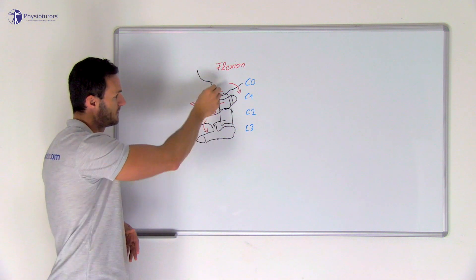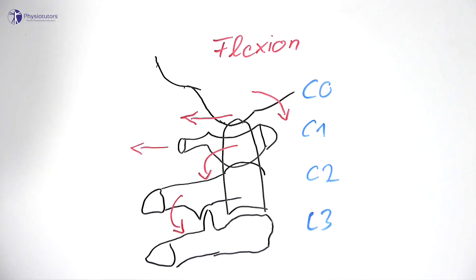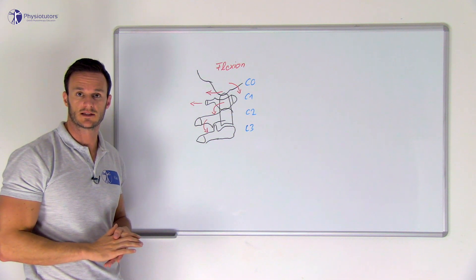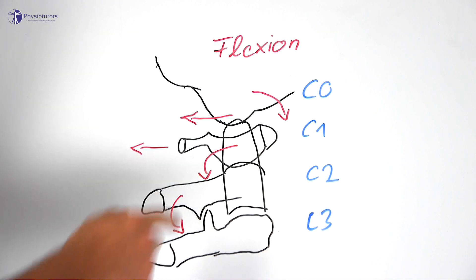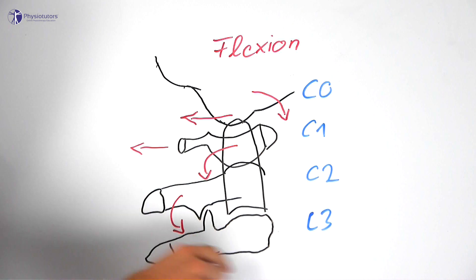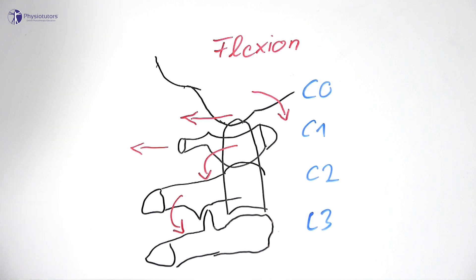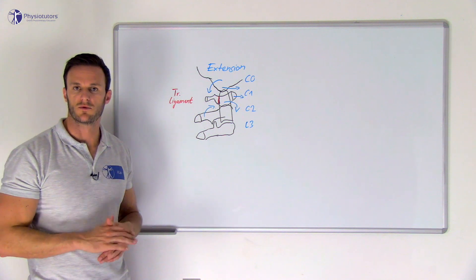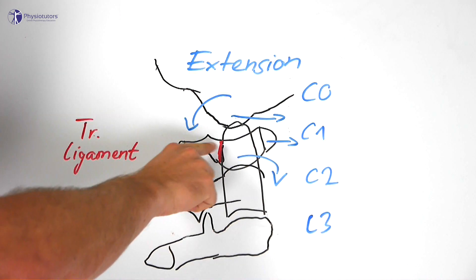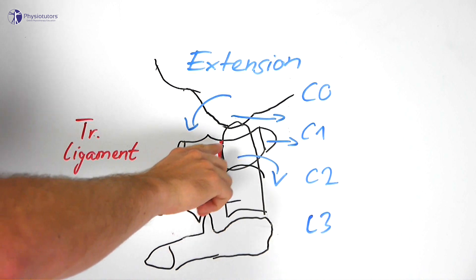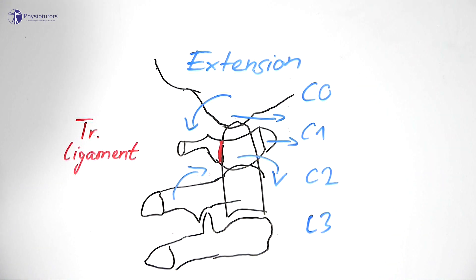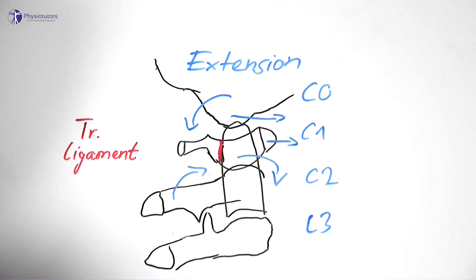As a side note, the backward tilt of the dens of C2 in turn causes an extension movement of C2 on segment C3. The exact opposite movement occurs with upper cervical extension. In this case, an intact transverse ligament will tilt the dens forwards, causing a flexion movement between C2 and C3.